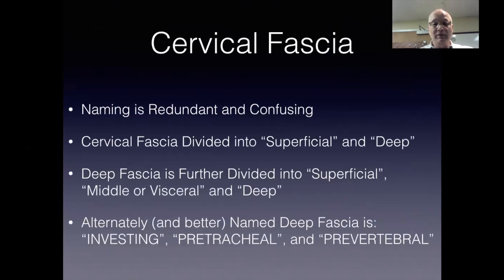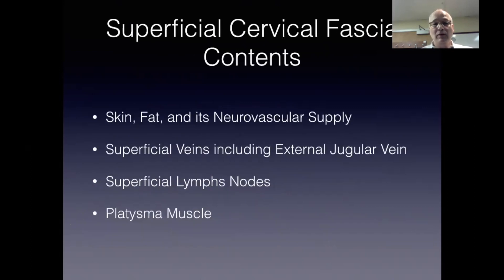I find the naming system for the cervical fascia to be confusing. Most literature will describe the superficial and deep compartments, when the deep compartment is then further divided into another superficial, middle or visceral, and another deep layer. For this presentation, I instead will use the terms investing, pretracheal, and prevertebral for the three layers of the deep cervical fascia. The superficial cervical fascia includes the skin, subcutaneous fat, the external jugular vein, and the platysma muscle.